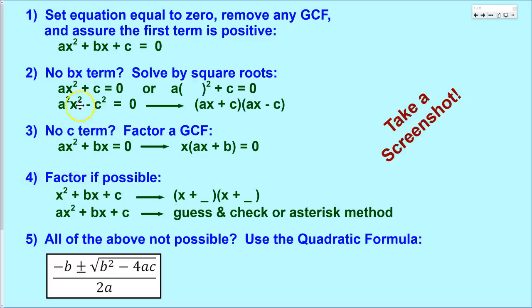Step number four is when you have all three terms — a trinomial — and we're trying to factor that. If the a term is exactly one, it's an easier situation where you pick two numbers that multiply to be c and add up to be b. If there is an a value, things get more complicated, but you can do guess and check or use the asterisk method to take fewer guesses. And finally, if none of the above work, the last resort is the quadratic formula, which is complicated and has a lot of opportunity for error.